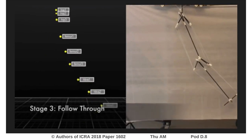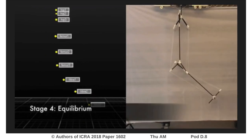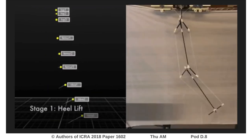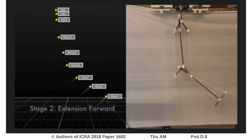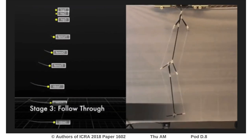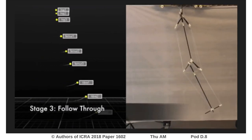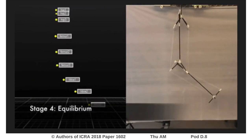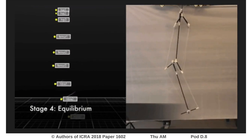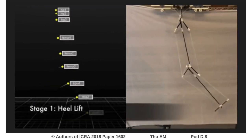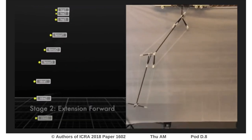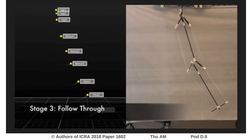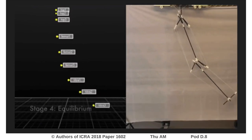The first stage contracts the hamstring muscle. The second slowly extends the gluteus maximus and the hamstring muscle while contracting the iliopsoas muscle. The third stage reverses the motion by releasing the iliopsoas and contracting the gluteus maximus. The fourth and final stage loosens all tension elements back to equilibrium, or the starting position.